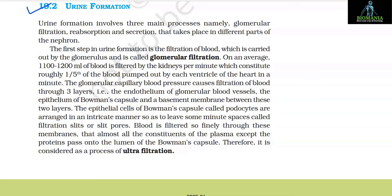Section 19.2: Urine Formation. Urine formation involves three main processes: glomerular filtration, reabsorption, and secretion, which take place in different parts of the nephron. The first step is filtration of blood, carried out by the glomerulus and called glomerular filtration. On average, 1100 to 1200 ml of blood is filtered by the kidneys per minute, which constitutes roughly one-fifth of the blood pumped out by each ventricle of the heart per minute.